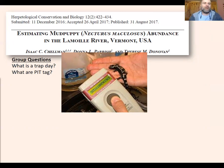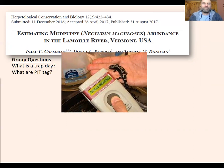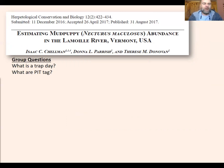You know which animal it is because of that unique tag number — that's how they marked individual mud puppies. Another question: how do they know if they re-caught them? Well, if you put PIT tags in them, when you catch them again you scan them to see if they've been caught before or if they're a new capture.